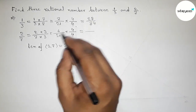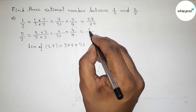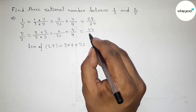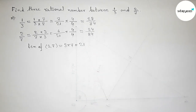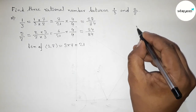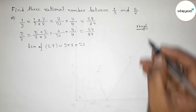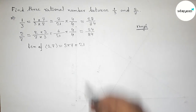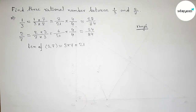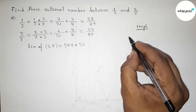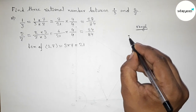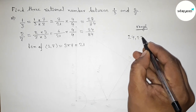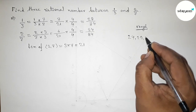After multiplying by 4: 7 times 4 is 28, and 21 times 4 is 84, giving 28 by 84. And 6 times 4 is 24, and 21 times 4 is 84, giving 24 by 84. So now both denominators are 84.